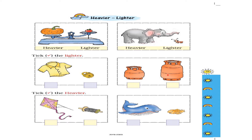Now we are going to complete this exercise: tick the lighter. Here we have to find out which is lighter and put a tick mark inside the box. We are comparing this shirt with this lock. The shirt seems to be big in size but it is light in weight. The lock seems to be small in size but it weighs more. So the shirt is lighter — that's why I put a tick mark here.